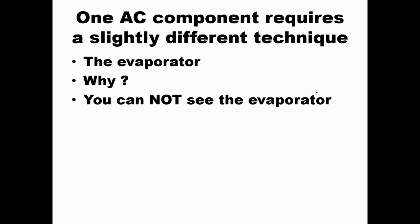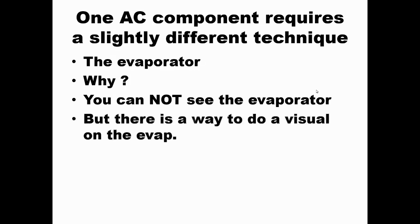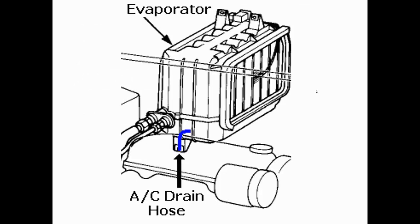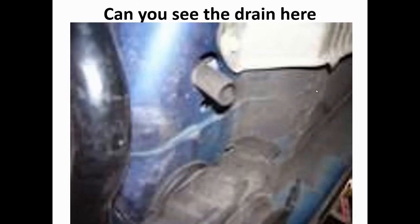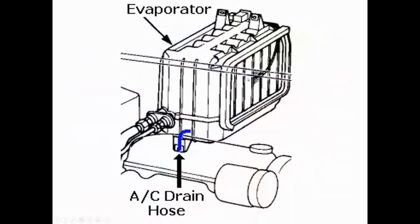There is one component that requires a slightly different technique — you're not going to be able to see the evaporator directly, but you can do a visual inspection if you know what you're doing. There is a way to look for oil residue near the evaporator: let me introduce the condensation drain. All vehicles have a condensation drain. Its purpose is for water to drip out of the evaporator casing onto the floor. That's an average-looking condensation drain — we're under the hood and you can see it. This is where you would look for a residue of oil. If there's any oil in there, that means the evaporator is leaking. The condensation drain is there for water to drain out, but also for you to perform a visual inspection.